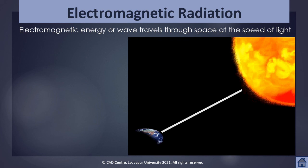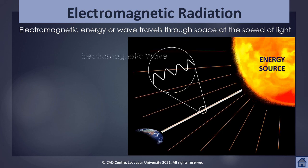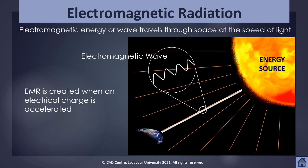Electromagnetic energy, also called electromagnetic wave, travels through space at the speed of light — approximately 3 × 10⁸ meters per second, or more precisely 299,792.46 kilometers per second. The source of energy radiates the electromagnetic wave, which travels through space and reaches the Earth's surface. Electromagnetic radiation is created when an electrical charge is accelerated.